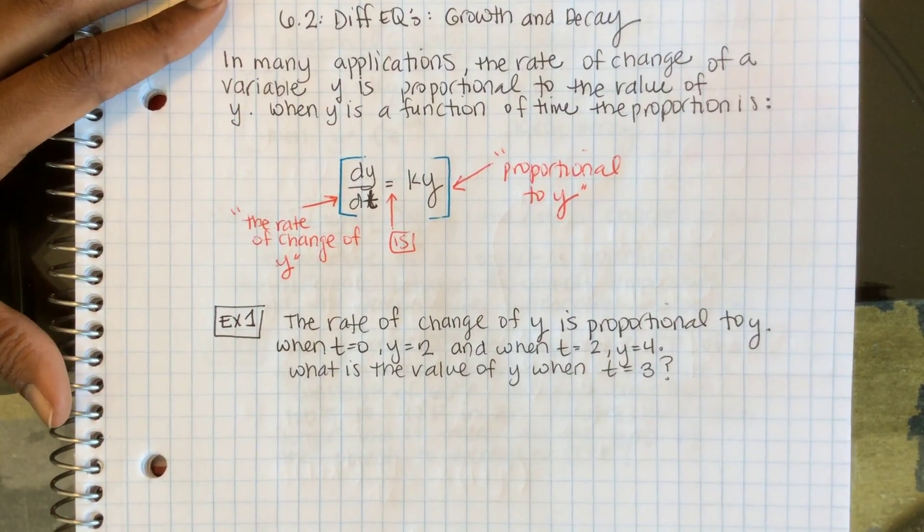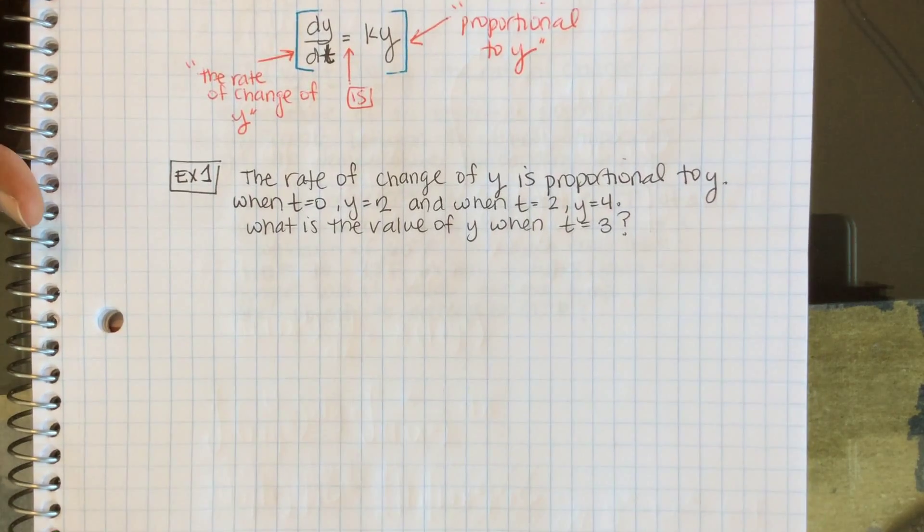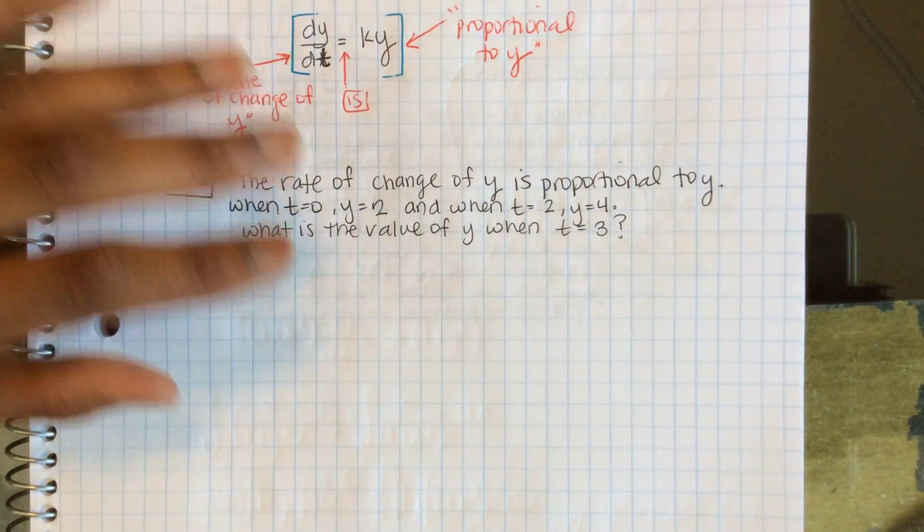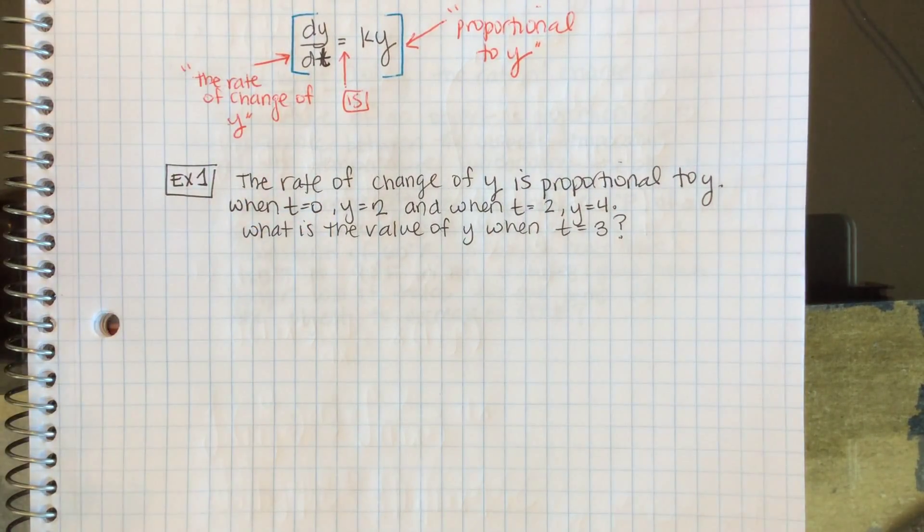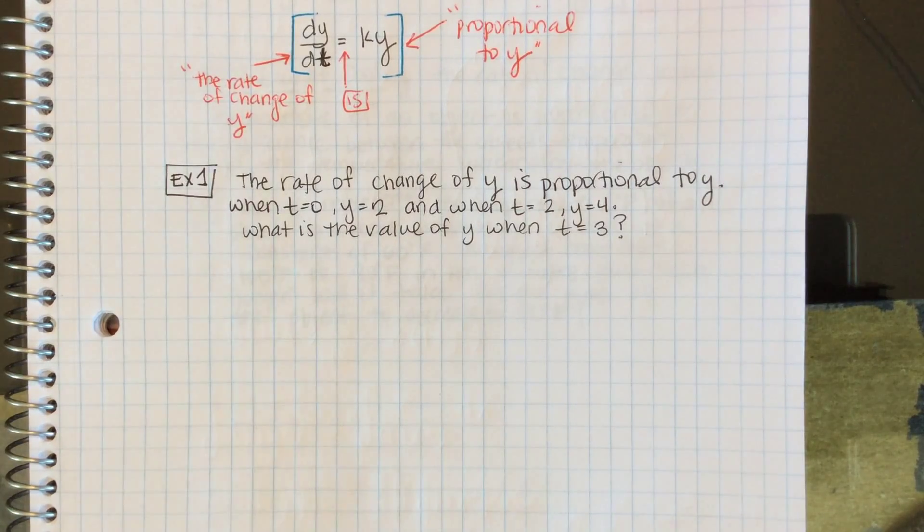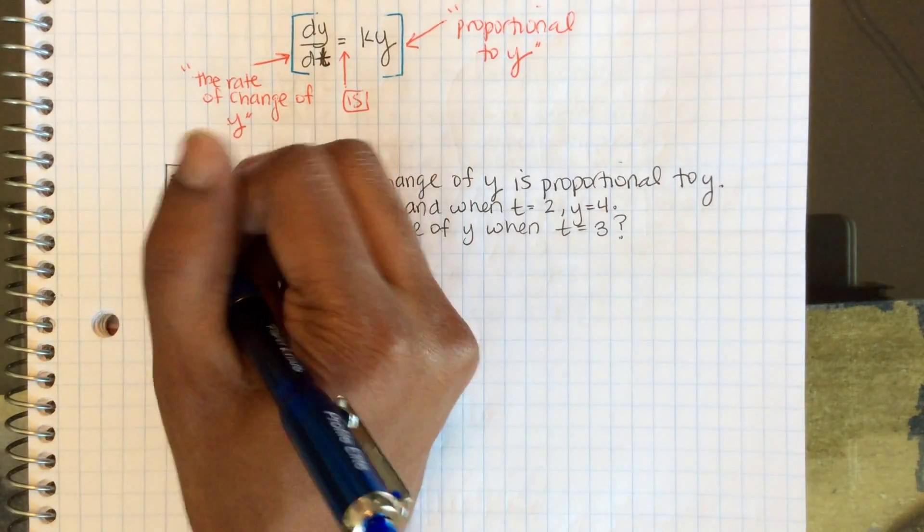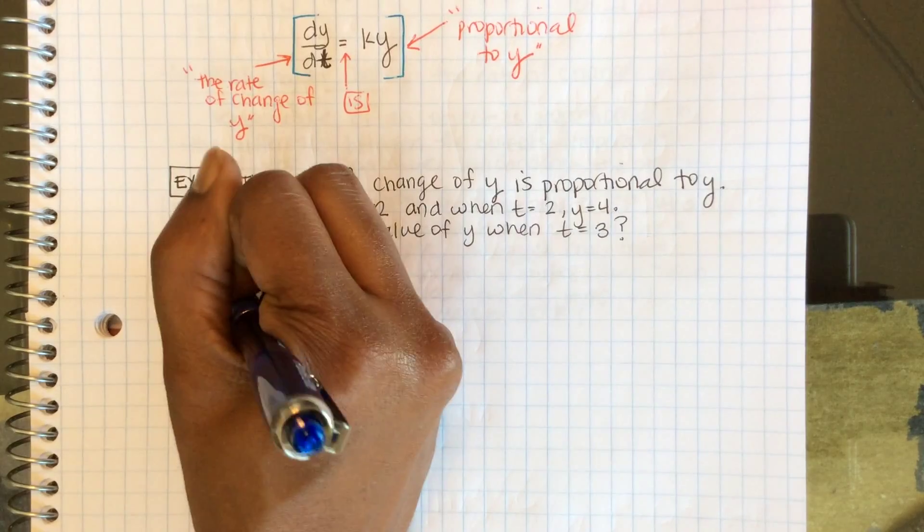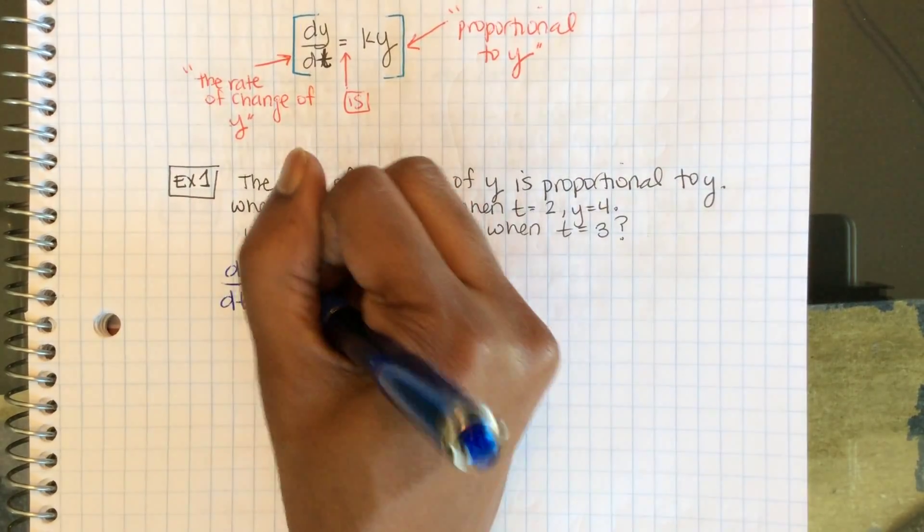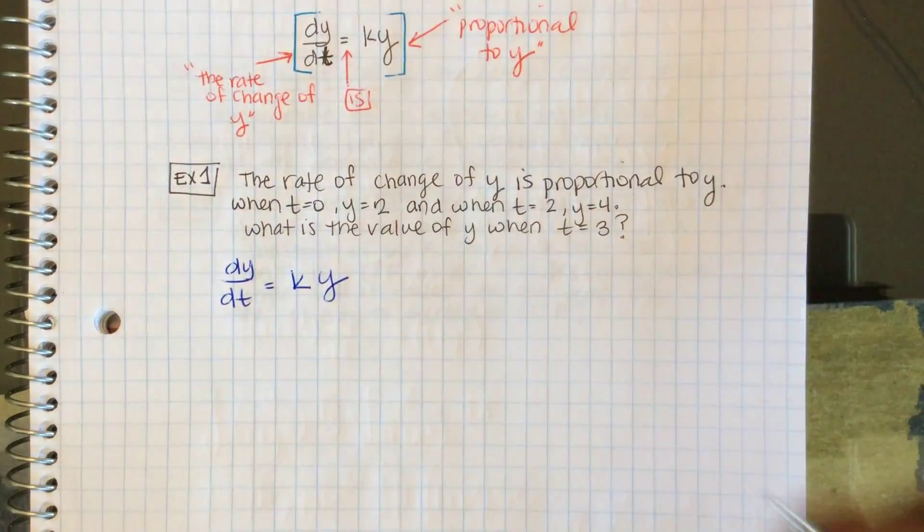Let's connect that to a basic example. The rate of change of y is proportional to y. When t = 0, y = 2, and when t = 2, y = 4. What is the value of y when t = 3? The rate of change of y, dy/dt, is proportional to y.